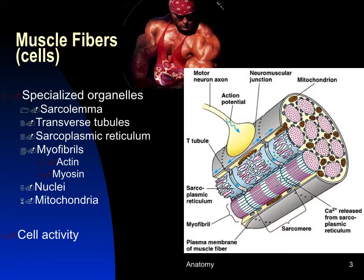Skeletal muscle tissue is made out of unique cell types called fibers, because these are such elongated cells — often much longer than they are wide. They are so long that they often have several nuclei per cell. They also have specialized organelles and a specialized membrane referred to as the sarcolemma.